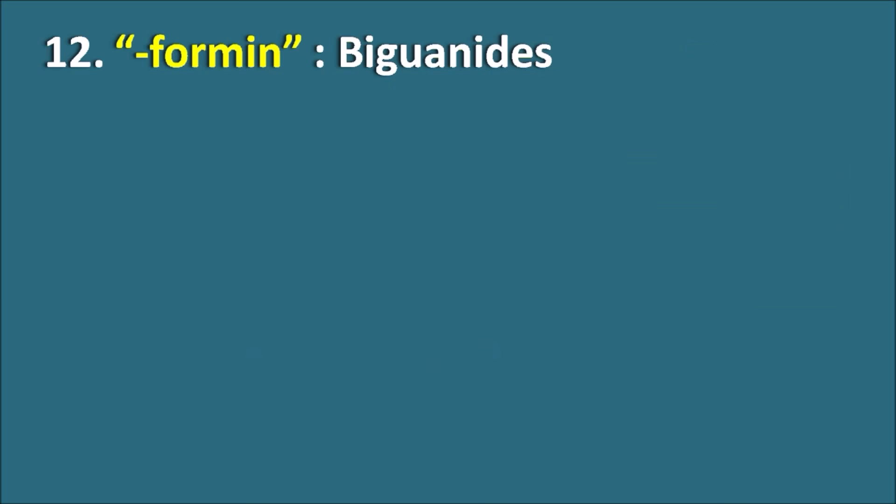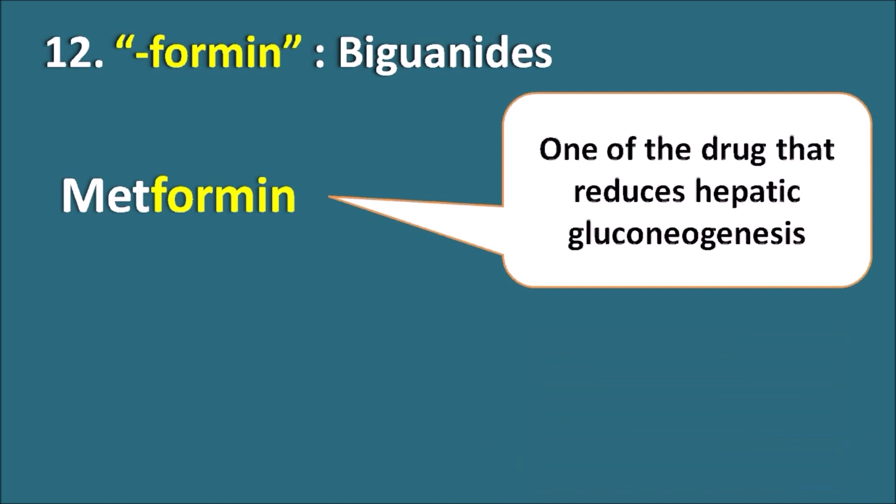Twelfth, the suffix '-formin' indicates they are biguanides. One drug in this category is Metformin. Metformin reduces hepatic gluconeogenesis and is used as an antidiabetic agent.